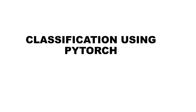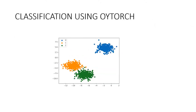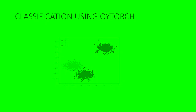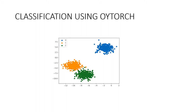In machine learning, classification refers to a predictive modeling problem where a class label is predicted for a given example of input data. Examples of classification problems include whether an email is spam or not, or given a handwritten character, classify it as one of the known characters. These are all examples of classification.